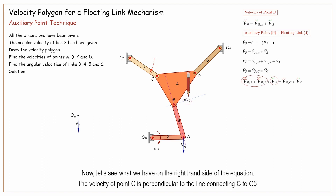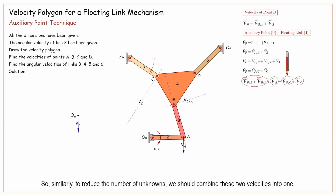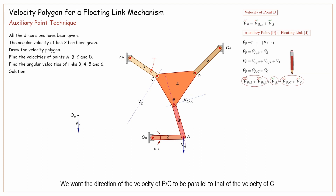Point P must lie on the extension of A-B, but we don't know where exactly. Because for any point P on this extension, the velocity of P with respect to B is parallel to the velocity of B with respect to A. Now let's see what we have on the right-hand side of the equation. The velocity of point C is perpendicular to the line connecting C to O5. Again, for the velocity of P with respect to C, we don't have any information.